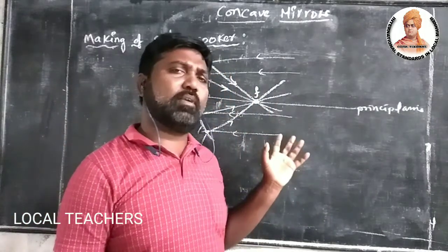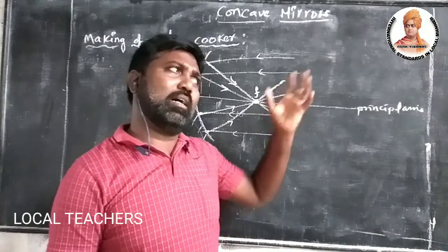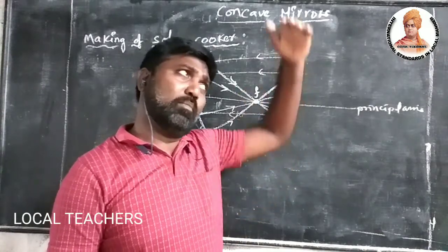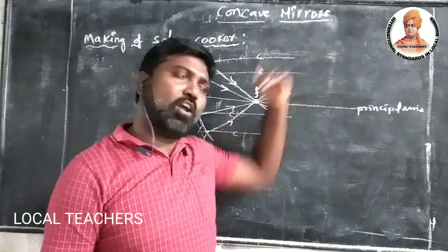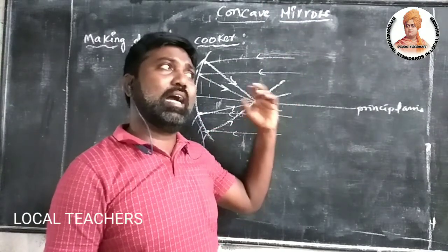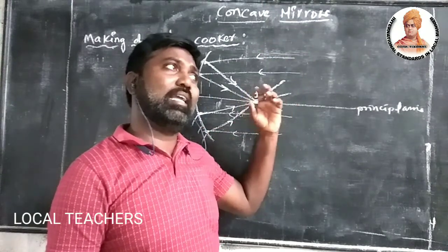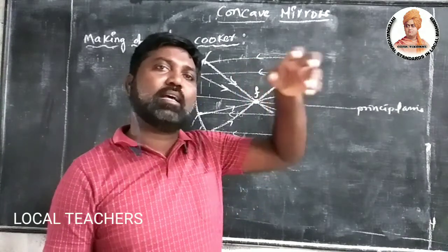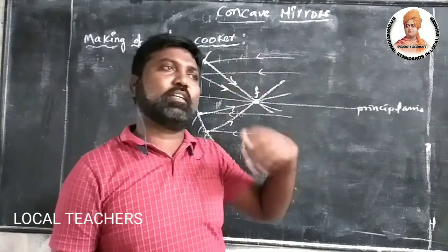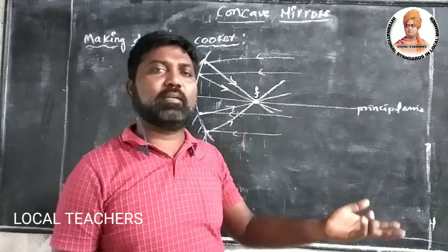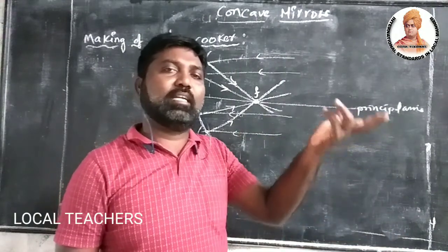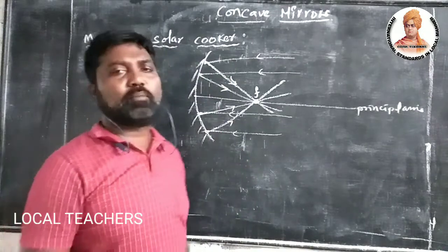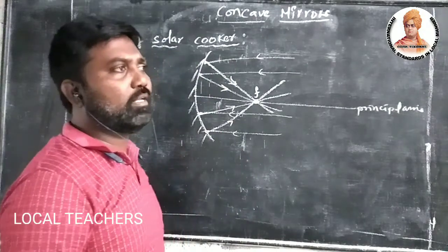Based on this property, Archimedes placed the mirrors such that more sunlight fell on them, and they converged all the reflected rays onto the ships only. After some time, it was heated and burned out. This is the general property of the concave mirror.